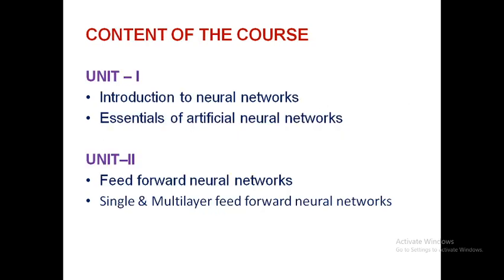Coming to the contents of this course, there are five units. In the first unit we will see an introduction to neural networks, covering how neural networks evolved, what biological neural networks are, what artificial neural networks are, the organization of the brain, biological neurons, artificial neurons, models, architectures, applications, and the essentials of ANN like types of neuron activation functions.